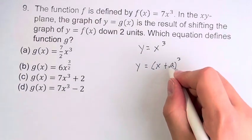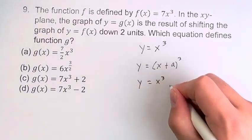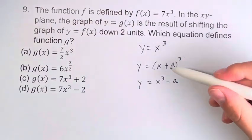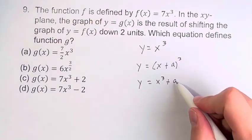If we take the a outside of the parentheses and do x cubed minus a, this is shifting it down a units. Or if it's positive, up a units.